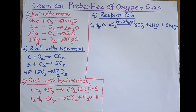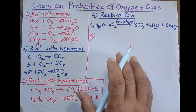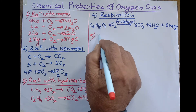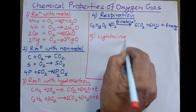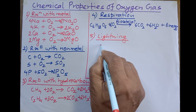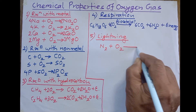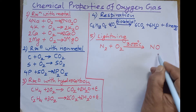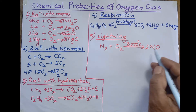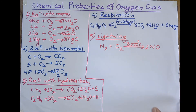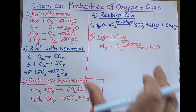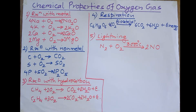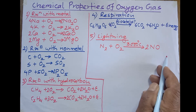Another chemical property: during lightning, oxygen of the atmosphere combines with nitrogen at about 3000°C to form nitric oxide (NO). In this natural process, nitrogen reacts with oxygen at the very high temperature produced during lightning. The nitric oxide later comes to the soil and forms nitrates, which are absorbed by plants for making protein. This natural phenomenon is very important and is a key chemical property of oxygen.